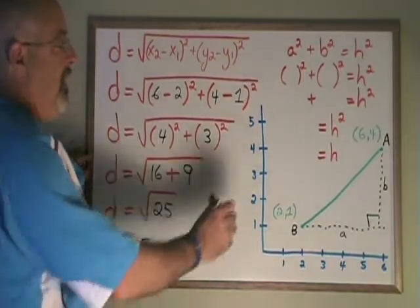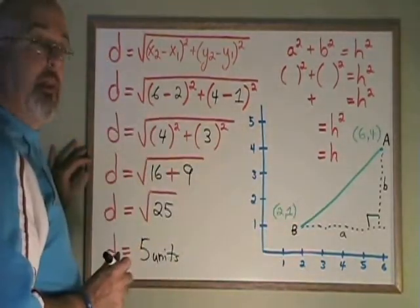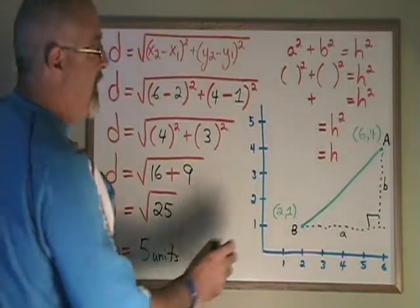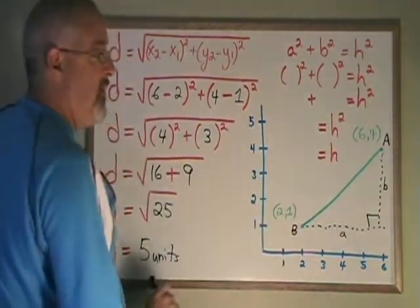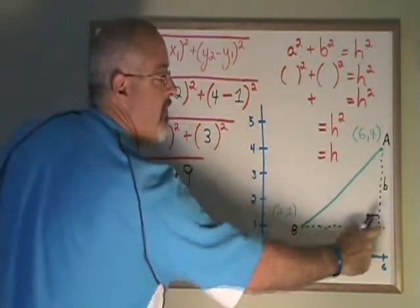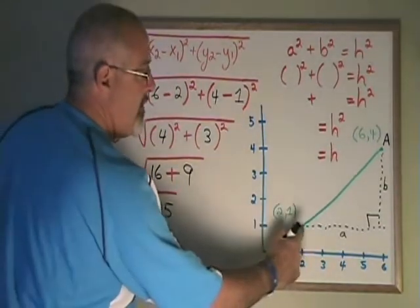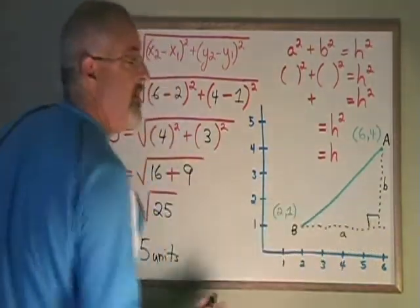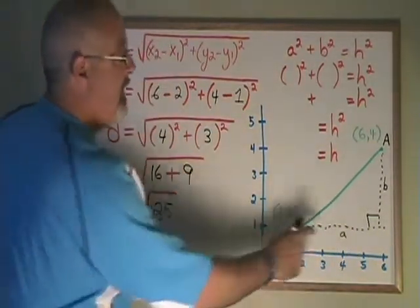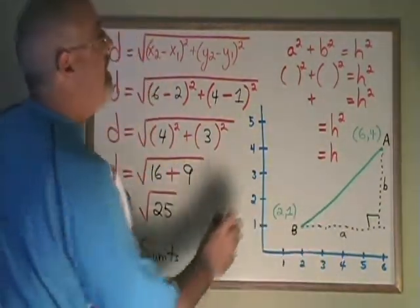Let's try and do the same situation with Pythagorean theorem. Since the x-coordinate of this point is 2, and the x-coordinate of this point over here would be 6, the distance between B and this corner is going to be 4 units. Our lowercase a is 4.